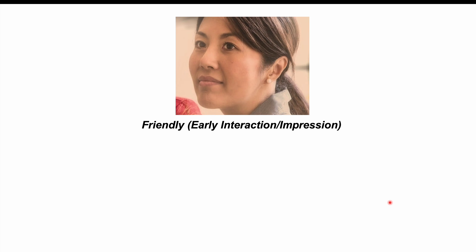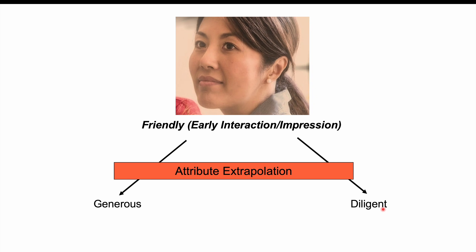Another example would be having a friendly interaction with somebody. If you've had an early interaction and they're very friendly — and that's all you know about them — you would have certain thoughts about them: that they're more positive in other aspects of life, including being more generous, even though you don't know whether they're generous or not. You may also think they're more diligent than they are, even though you don't know if they are. Again, that's attribute extrapolation.